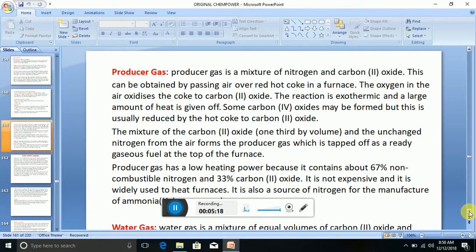The oxygen in air oxidizes the coke to carbon 2 oxide. The reaction is exothermic, and a large amount of heat is given off. Some carbon 4 oxides may be formed, but this is usually reduced by the hot coke to carbon 2 oxide. The mixture of the carbon 2 oxide, one third by volume, and the unchanged nitrogen from air forms the producer gas, which is tapped off as a ready gaseous fuel at the top of the furnace.